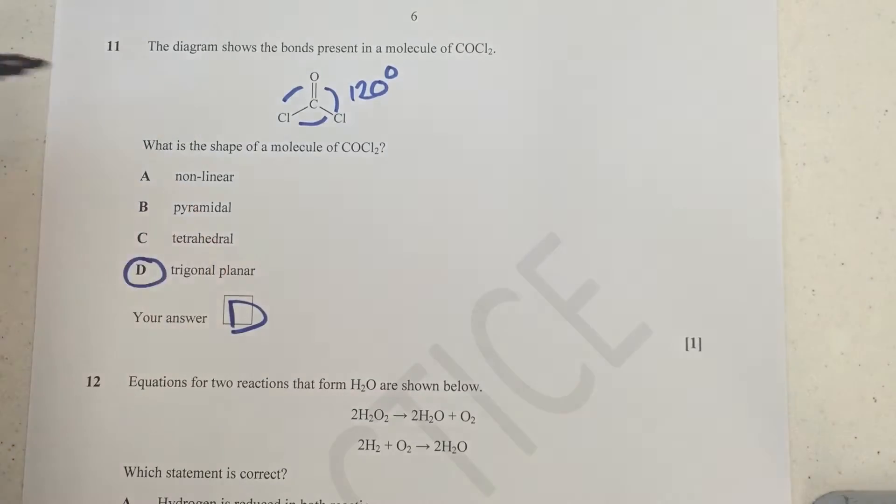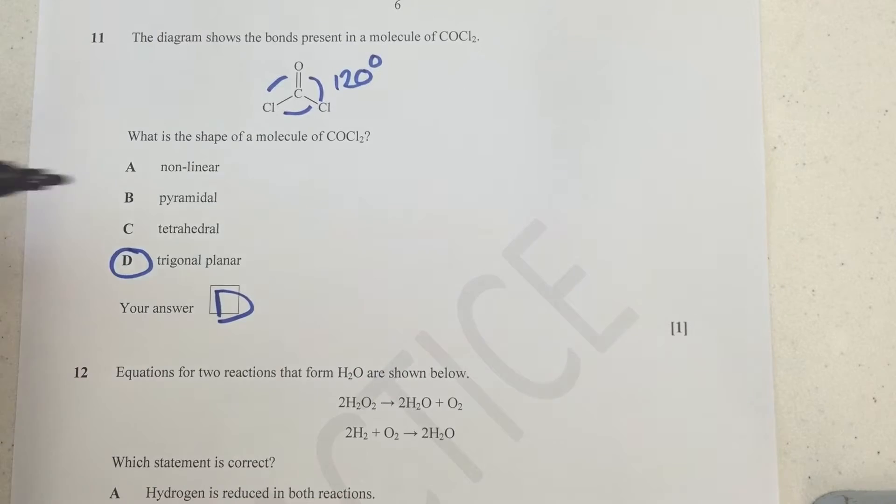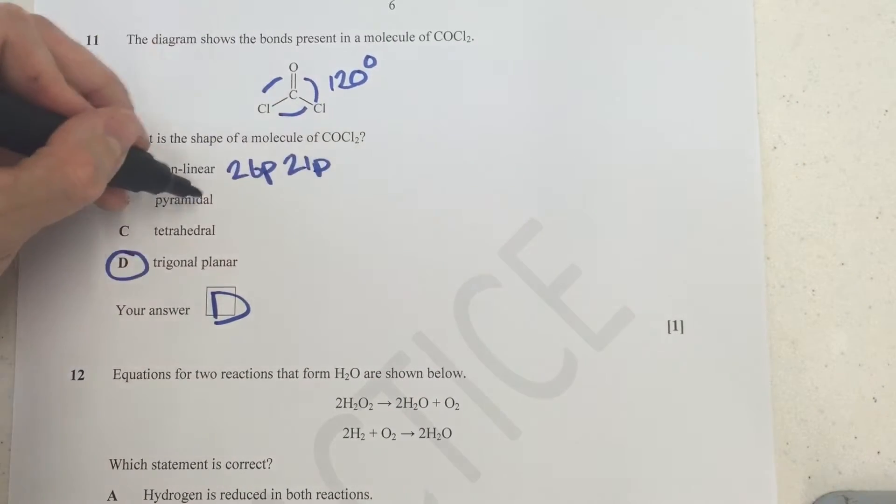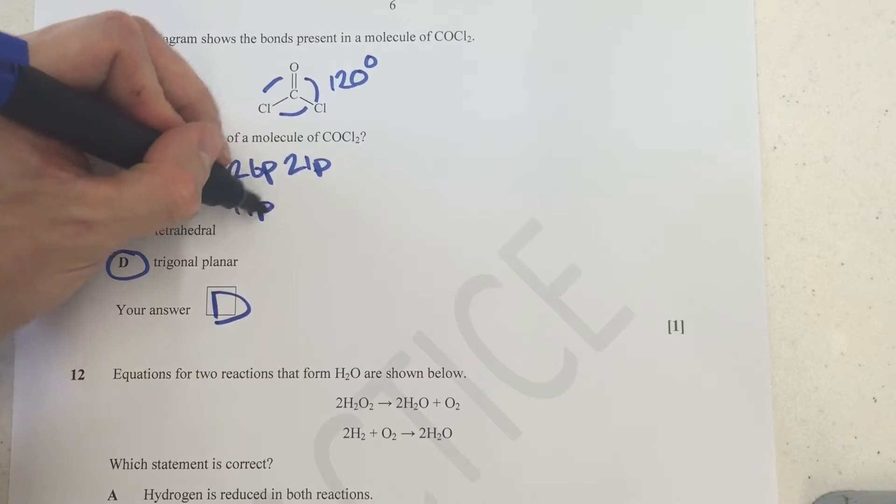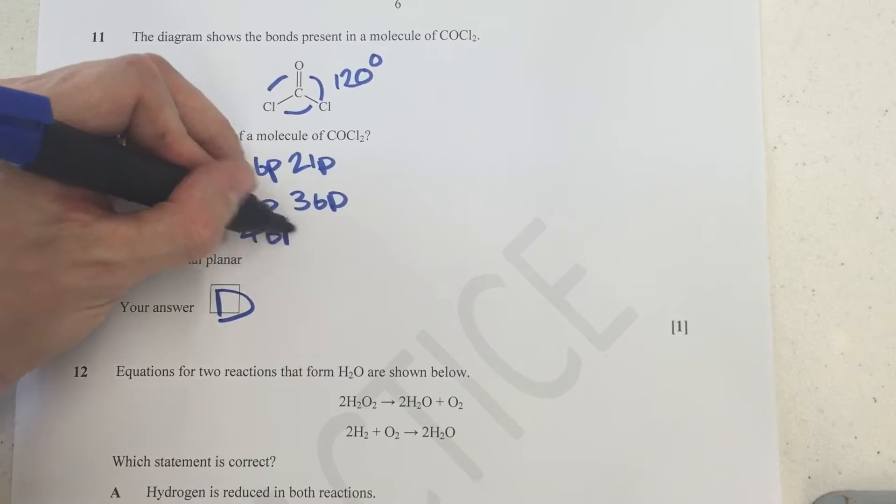Hopefully when you do get multi-choice questions like this, you're able to answer it in less than a minute. Can't be non-linear because it would need two bond pairs and two lone pairs. Pyramidal would need one lone pair and three bond pairs, and tetrahedral would be four bond pairs.